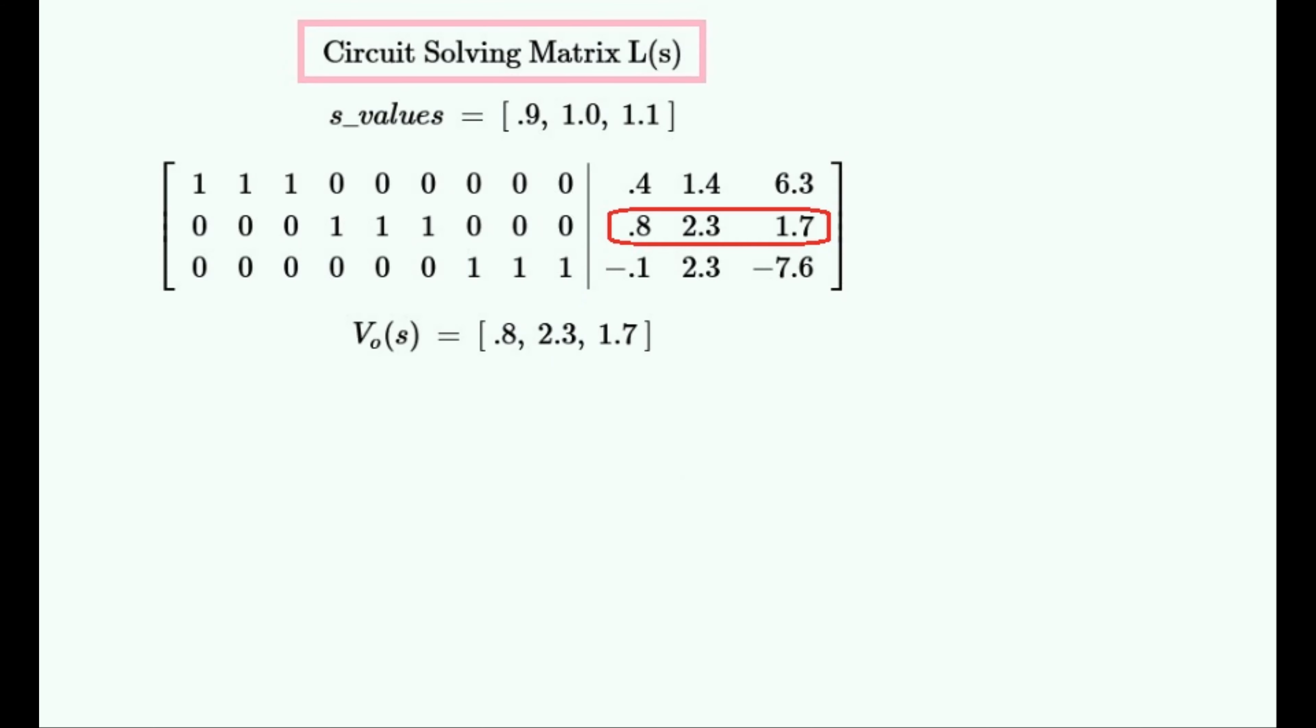The output voltage would correspond to these three numbers circled in red. You would then have to convert these numbers to a ratio of two polynomials like this. Then you would have to convert it into a form of equation like this that you could easily use the inverse Laplace transform on.